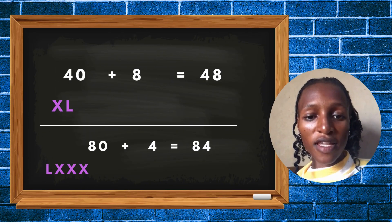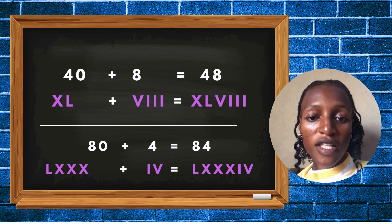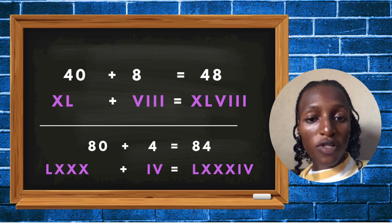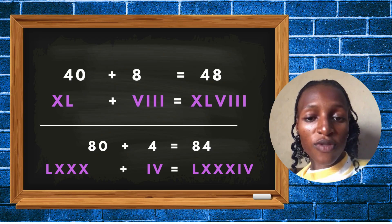For example, 48 is 40 plus 8. So once you know the Roman figure for 40 and the Roman figure for 8, by adding the two Roman figures together, you can write it the exact way.